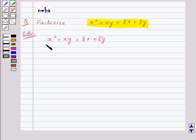Here we can notice that the first two terms, x squared and xy, have a common factor x and the last two terms, 8x plus 8y, has a common factor 8. So we will group the first two terms and the last two terms. This will be equal to x squared plus xy plus 8x plus 8y.